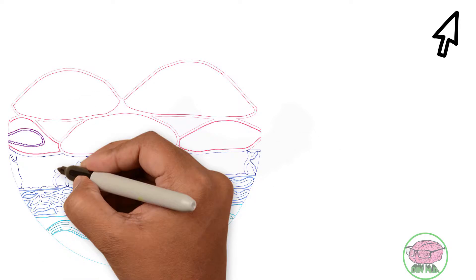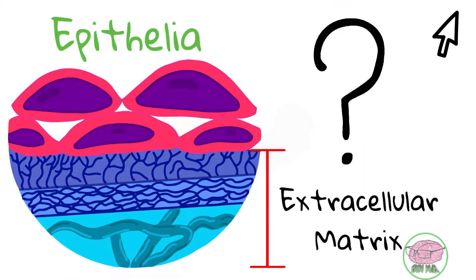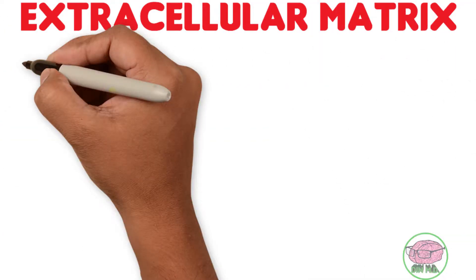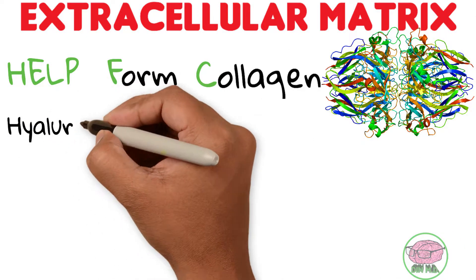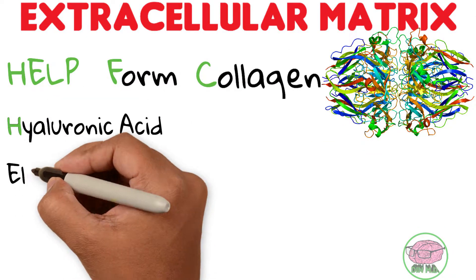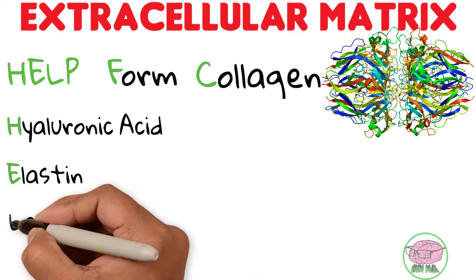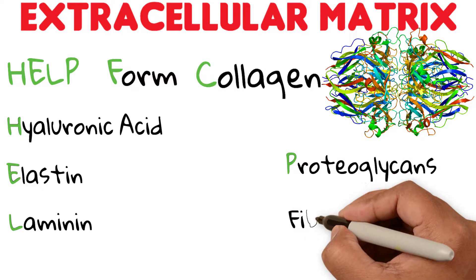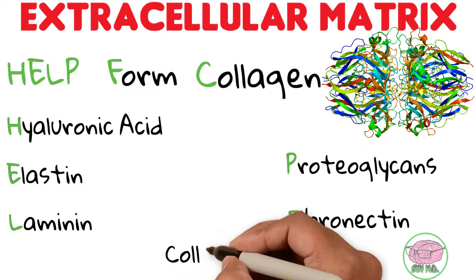As we learned in the previous histology video, the epithelial tissue has an extracellular matrix — but what is it made of? To remember its components, you can use the useful mnemonic HELP for collagen. The H is hyaluronic acid, the E is elastin, the L is laminin, the P is for proteoglycan, the F is for fibronectin, and finally collagen is collagen.